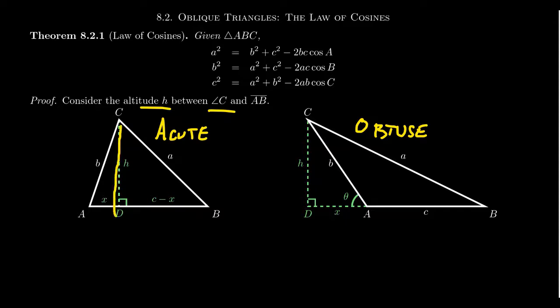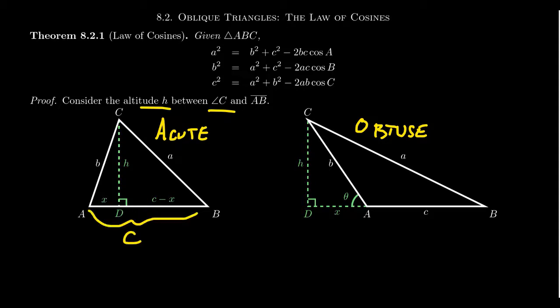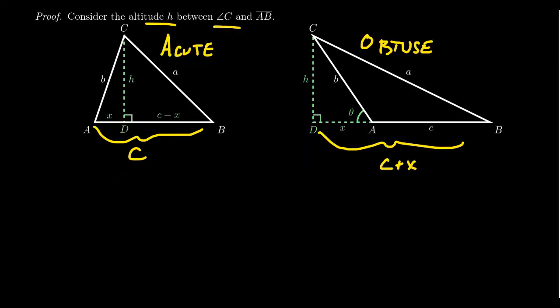The height of triangle ABC is a leg of triangle DCB, and the hypotenuse is A. The main difference between cases is how side length C comes into play. For the acute case, looking at triangle DBC, the other leg is C minus X, because the total distance is C and subtracting X gives that distance. Because the altitude is exterior in the obtuse case, the total distance between points D and B is C plus X. Because of these important differences, we need to separate the proofs of the two cases.